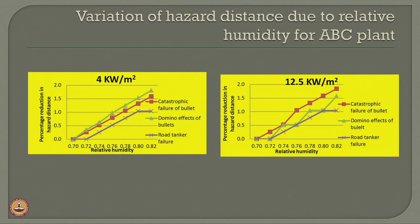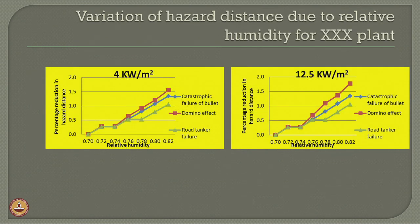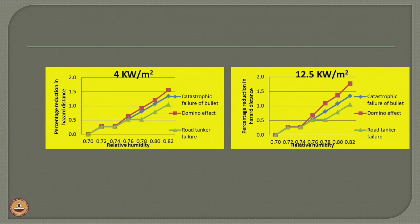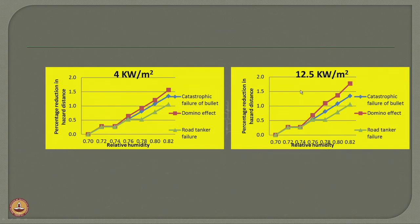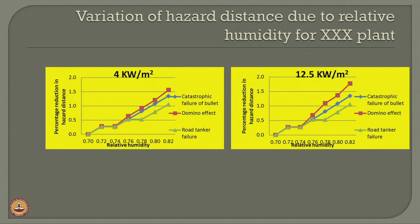We then studied the variation of hazard distance due to relative humidity for both the ABC and XXX plants at thermal intensities of 4 and 12.5 kilowatt per square meter. For different kinds of failure — catastrophic failure of the bullet, domino effects, and road tanker failure — the percentage reduction in hazard distance increases as relative humidity increases. This trend is observed for both radiation intensities and at both plant locations.